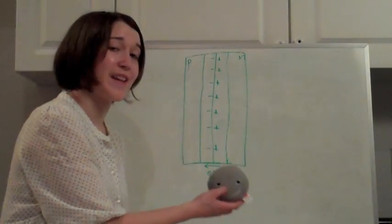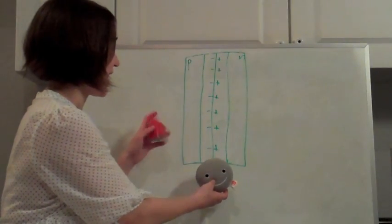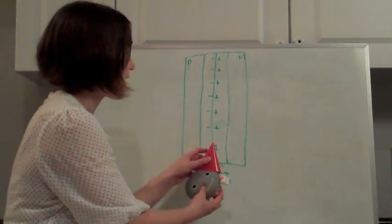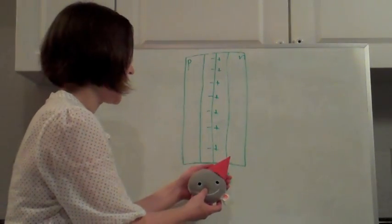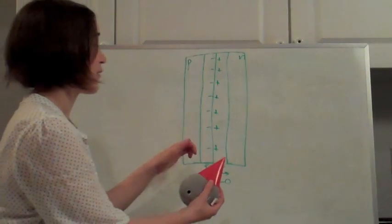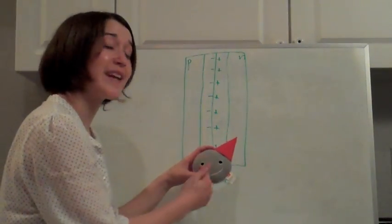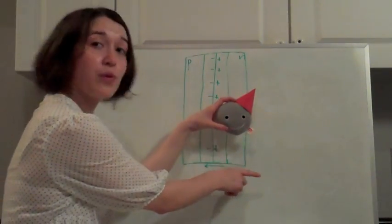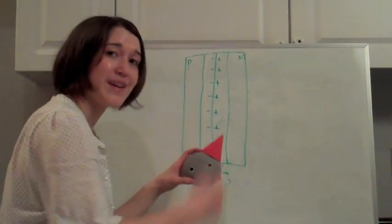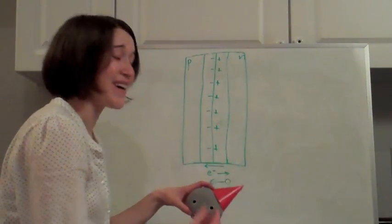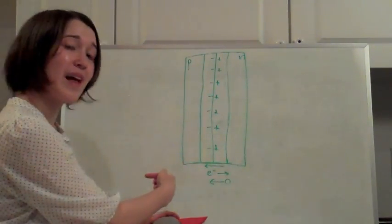So if our electron is hit by a photon in this electric field region and jumps into the conduction band, then because there's an electric field, the electron, which is negatively charged, will move to the right. And the hole, the desk that it's sitting at, which is positively charged, will move to the left.